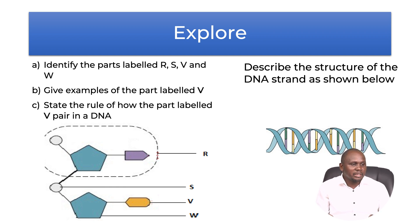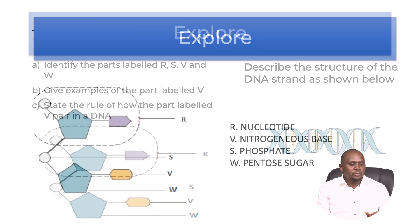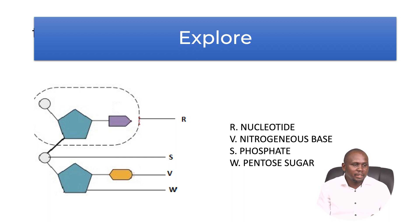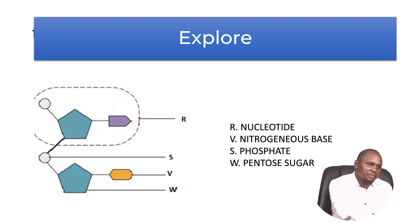We can now identify the parts labeled R, S, V, and W. Part R is what we call the nucleotide. Part V is the nitrogenous base. Part S is the phosphate. And part W is what we call the pentose sugar.